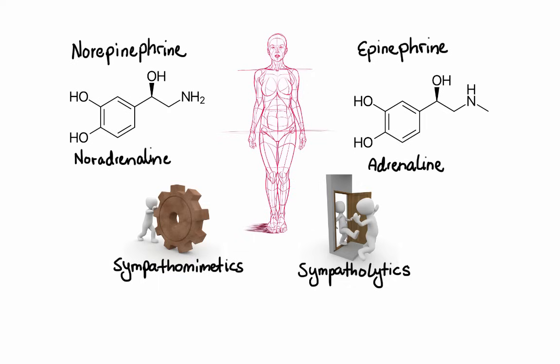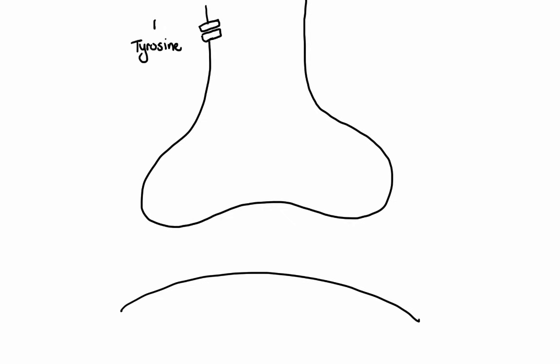To get a better understanding of how these drugs work, let's take a closer look at the neurotransmission process in an adrenergic neuron. There are five main steps involved in adrenergic neurotransmission. First, amino acid tyrosine is transported into the neuron by the sodium-dependent tyrosine transporter. Once inside the neuron, tyrosine gets hydroxylated by the enzyme tyrosine hydroxylase to L-3,4-dihydroxyphenylalanine, also known as L-DOPA, or levodopa.